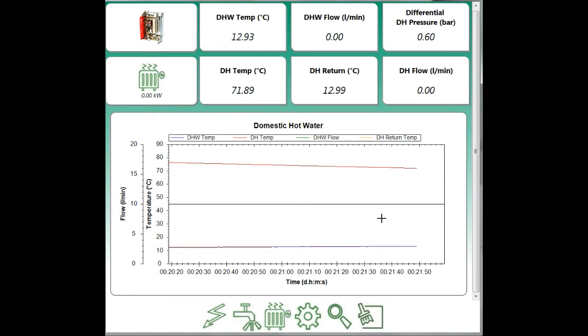The domestic hot water flow rate, green, is at the bottom at zero. We're not running taps at the moment. And the district heating return temperature in yellow, that's also at about 13 degrees C.